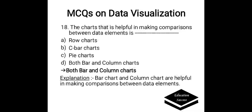The chart that is helpful in making comparisons between data elements is — Options are: A. Row charts, B. Bar charts, C. Pie chart, D. Both bar and column chart. Correct answer is both bar and column chart. Bar chart and column chart are helpful in making comparisons between data elements.